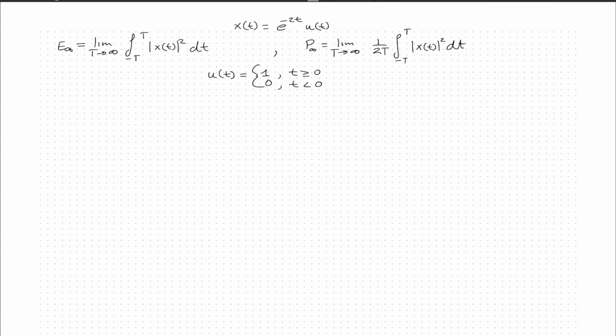To find the energy of the signal, we have the equation: the limit as T approaches infinity, integrating the signal from negative T to T. We take the absolute value of the signal x(t) squared and then integrate.